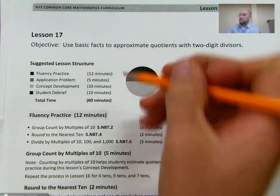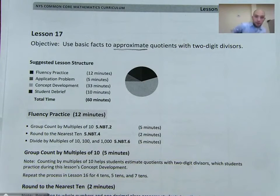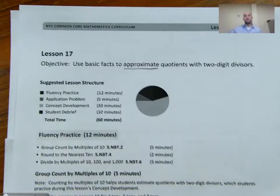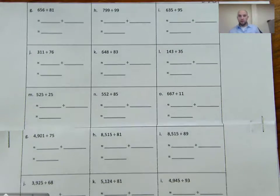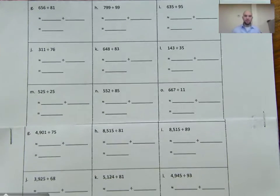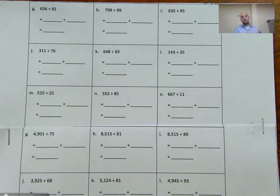When we see the word approximate, that should let us know that means we're going to be rounding. So we're going to be finding not exact quotients, but approximate quotients to help us come up with reasonable estimates for division problems. We put together some problems from lesson 17 and then some from lesson 18. Lesson 18 ones just deal with a little bit larger numbers in our dividend.